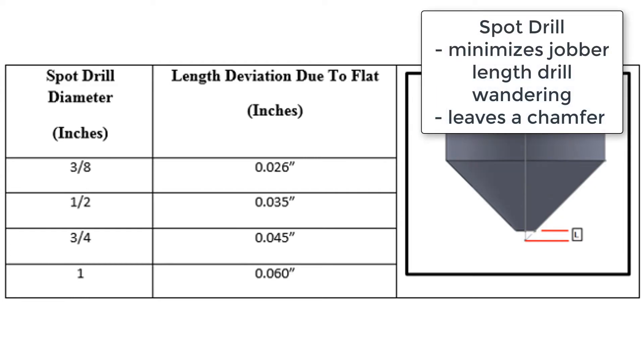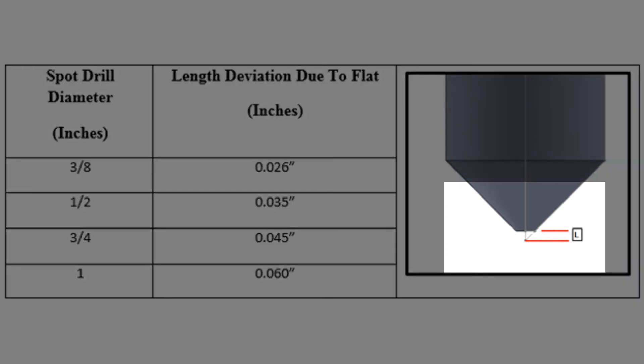When programmed correctly, a 90 degree spot drill will create a starting hole for a jobber length drill and leave the required chamfer. However, to program the correct depth, the fact that a spot drill does not come to a true point must be compensated for.